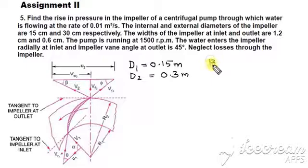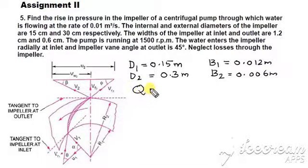And the breadth of the impeller at the inlet and outlet respectively, 1.2 and 0.6 centimeters. So B1 in meters will be 0.012 meter and B2 will be 0.006 meter. And of course, the discharge Q is available.